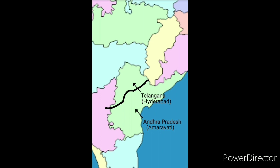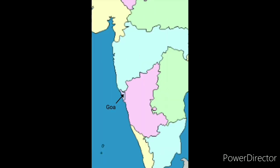In 2020, Jammu and Kashmir, which was earlier a state, is now considered a union territory. So the total count of states is reduced to 28 only. Now we have the smallest state of India, that is Goa, and its capital is Panaji.